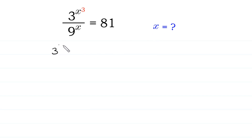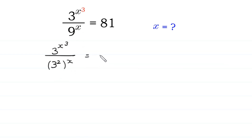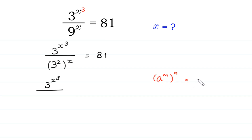3 to the power x cubed divided by — we can write this 9 as 3 squared, whole to the power x, is equal to 81. According to the property of exponents, a to the power m whole to the power n is equal to a to the power m times n. We multiply this power 2 by this power x, giving 3 to the power 2x, is equal to 81.